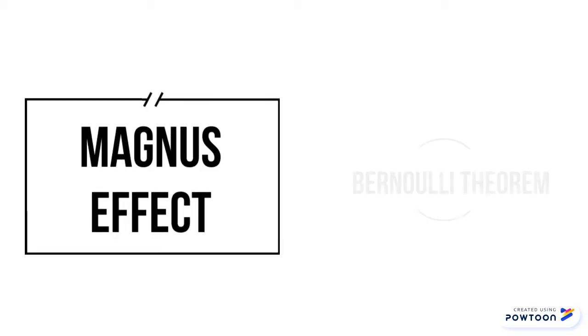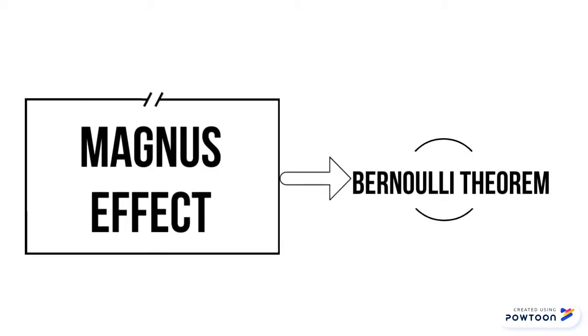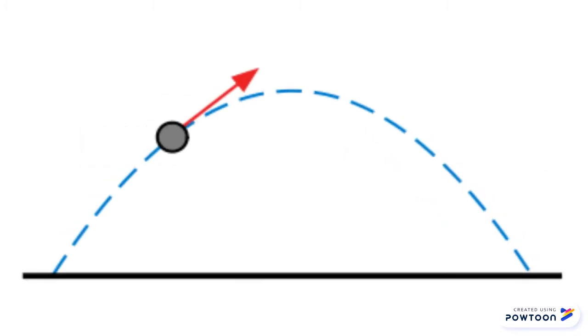Today, we'll talk about the Magnus effect and what variables have an influence in this phenomenon. As we can observe, when throwing an object horizontally, it describes a parabolic trajectory.